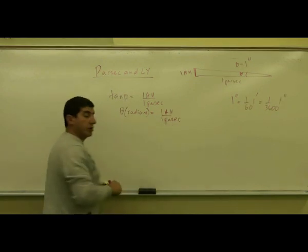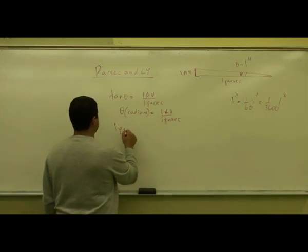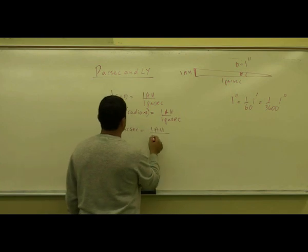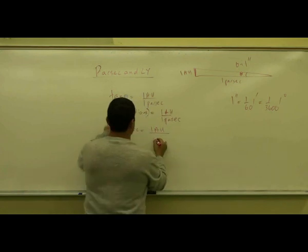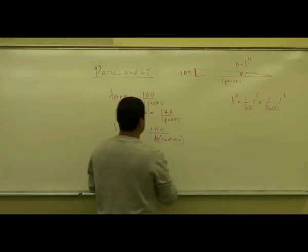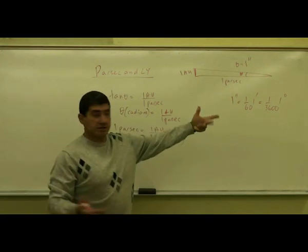So if I want to know how long is the parsec unit, I cross-multiply. I say one parsec is equal to one AU divided by one arcsecond, the data expressed in radians.